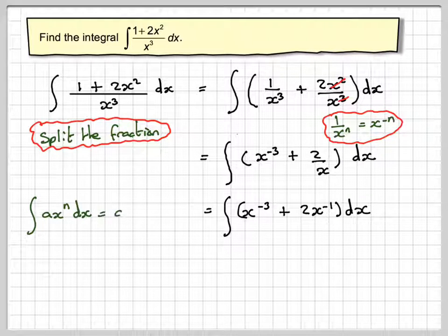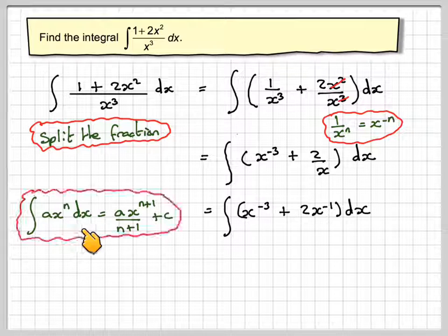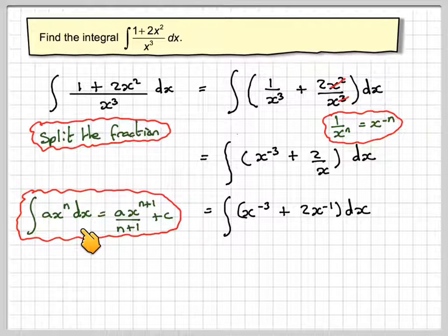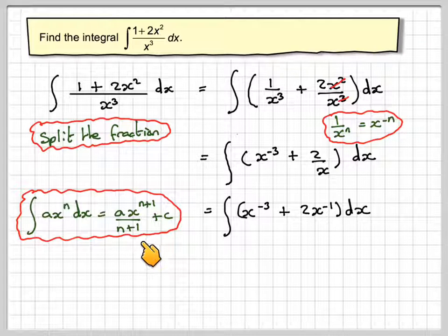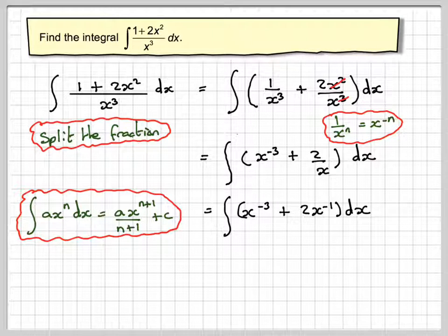Right, the rule of integration is: the integral of ax^n dx is ax^(n+1)/(n+1) + c, provided n is not equal to -1.